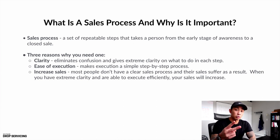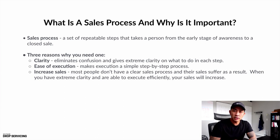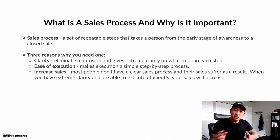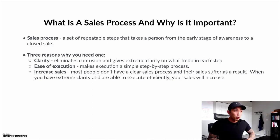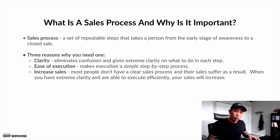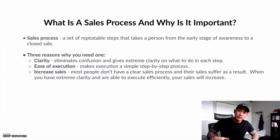That leads to point number two, which is ease of execution. When you have clarity and you know what to do in each step of the process, execution becomes simple and easy — you just look at your process and follow each step in order. We have been using the same three-step sales process for two years now. We've gotten better at it over time, and the only reason we're able to get better is because we use the same process, which gives us clarity and makes execution simple and step by step.